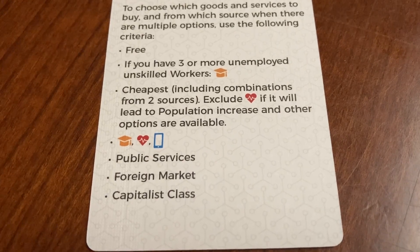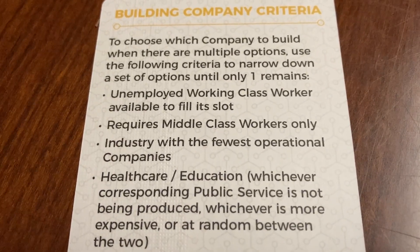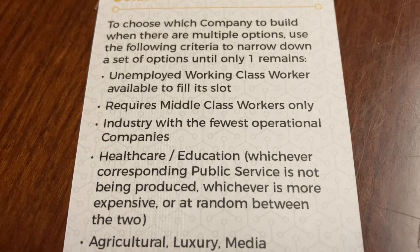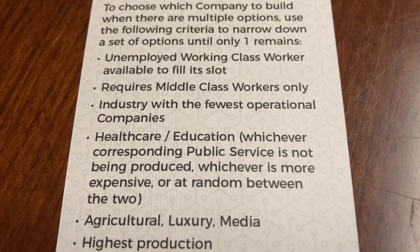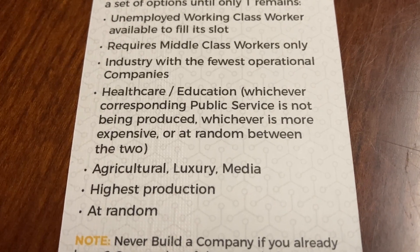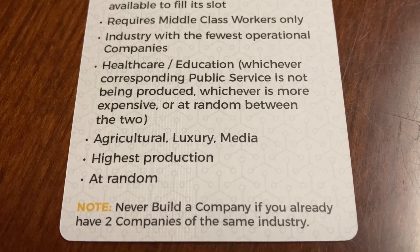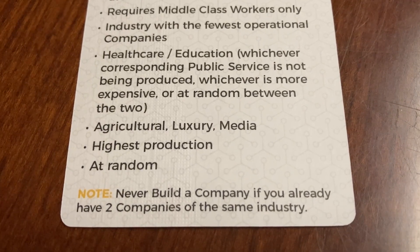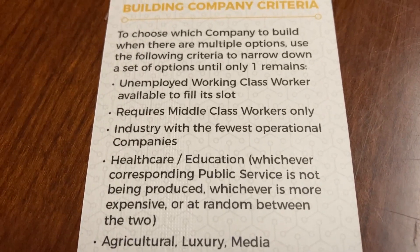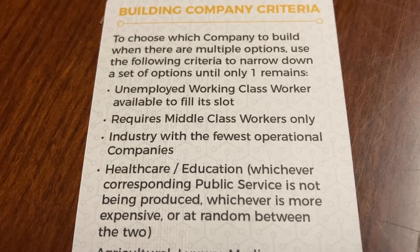For source priority when buying goods and services, buy from public services first, then the foreign market, then the capitalist class. When building a company, prioritize: first, unemployed working-class workers available to fill slots; next, companies requiring middle-class workers only; then the industry with the fewest operational companies; then healthcare and education, prioritizing whichever service is not being produced, then whichever is more expensive, then random; then agriculture, luxury, media, then highest production, and then at random. Note: you never build a company if you already have two companies of the same industry as middle class. This limits you but protects balance across goods.